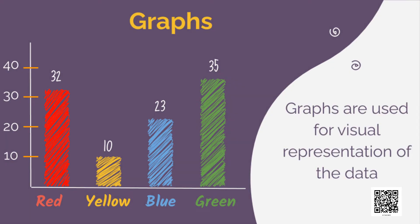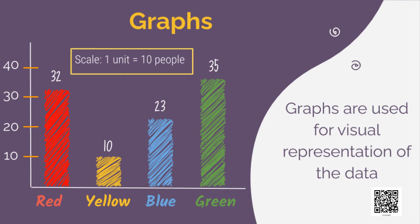And this is how it looks. Notice the numbers on the axis: 10, 20, 30 and 40. For larger numbers, as we won't be able to draw points for each number, we make use of something called a scale. Here we have marked a point for every 10 people. Looking at this bar graph, which color was the most liked? Yes, it is green with 35 students. The next most liked color is red with 32 students. And the least liked color is yellow with 10 students.